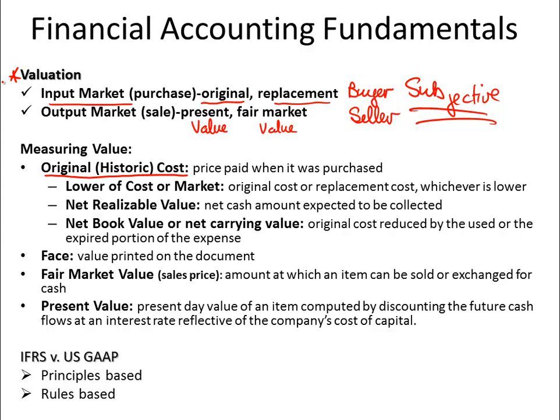An asset can be sold or exchanged for cash. The present value is the value today of any item, computed by discounting the future cash flows at an assumed interest rate reflective of the company's cost of capital. In other words, we're looking at purchasing power when we look at present value.